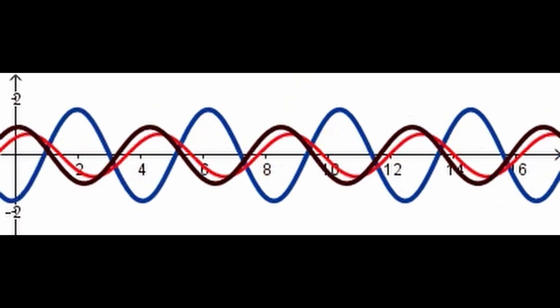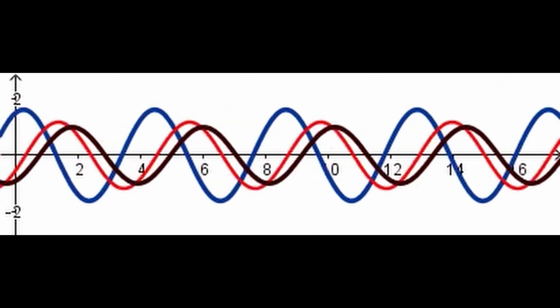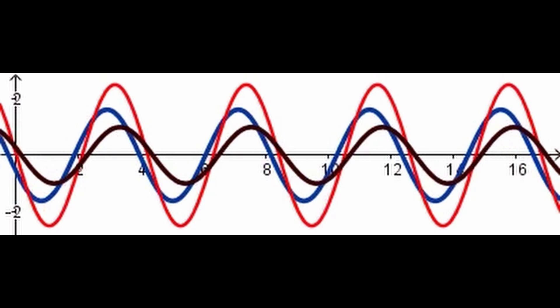The effective sample size in MCMC simulations depends on several factors. Autocorrelation: high autocorrelation between samples reduces ESS. Thinning the chain, keeping only every k-th sample, can mitigate this effect.